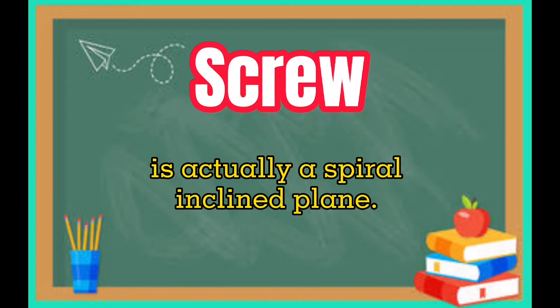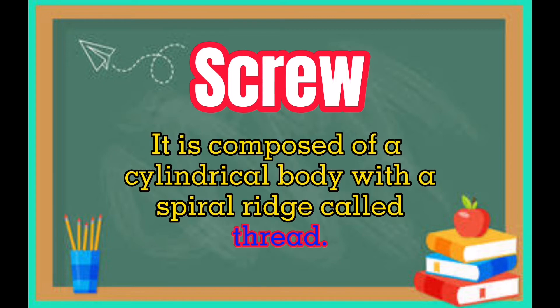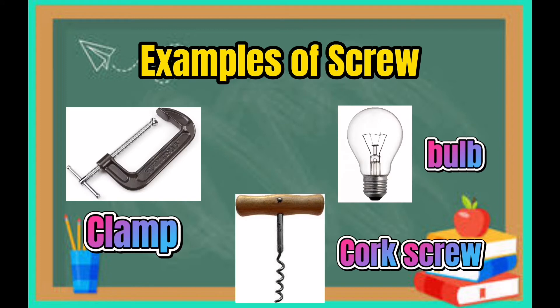The screw is actually a spiral inclined plane. It is composed of a cylindrical body with a spiral-ridged thread. Examples of screw are clamp, corkscrew, and bulb.